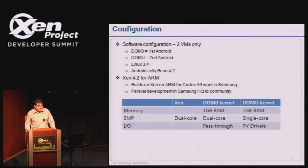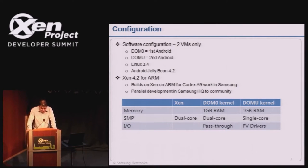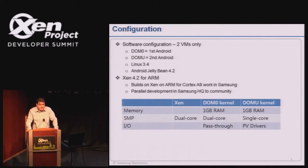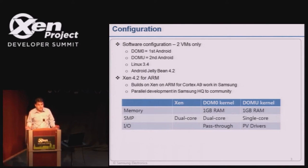A few key parameters: we split the two gigabytes of RAM equally — one gigabyte for each Android, fixed, no ballooning, no sharing. SMP is enabled; Xen runs dual core, DOM0 runs dual core, but for this demo DOMU runs only single core. The I/O is the big challenge. DOM0 has pass-through, so we expect good performance for all I/O, graphics, and display. But DOMU uses PV drivers, and that's where the challenge comes.